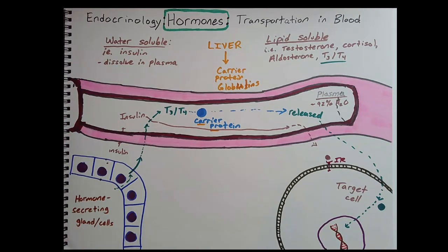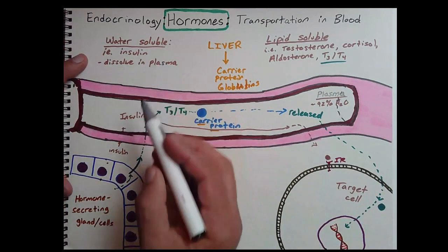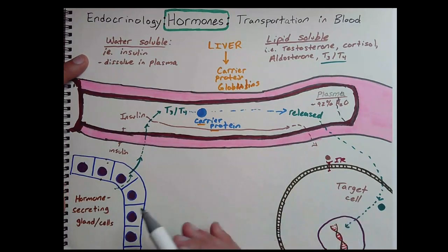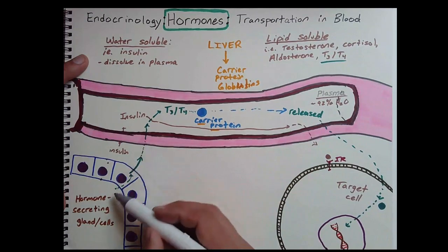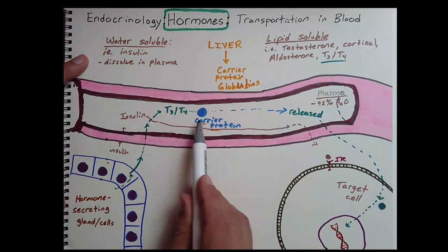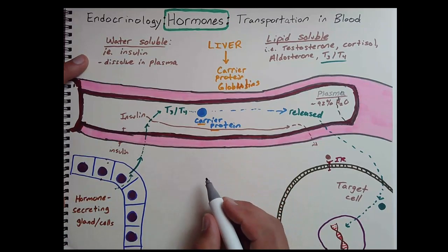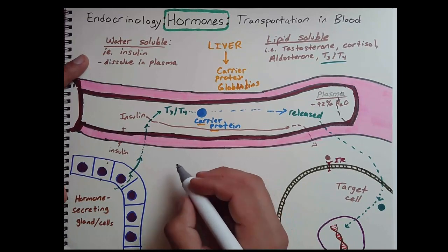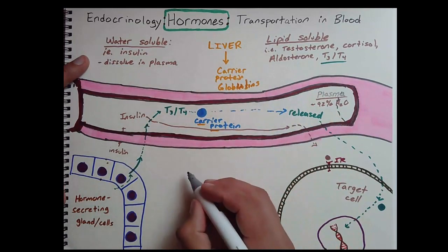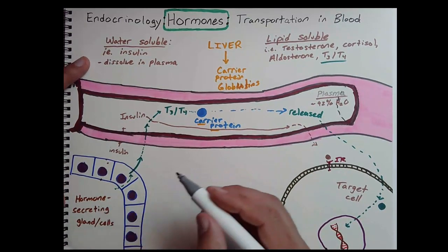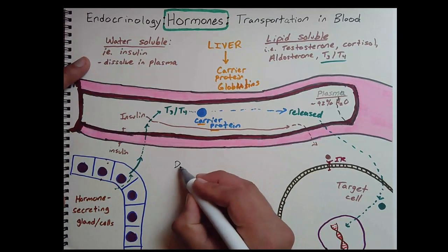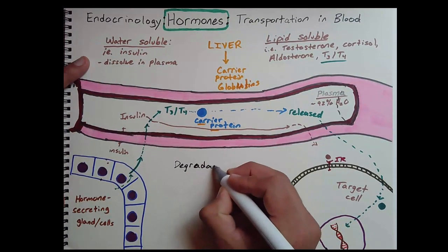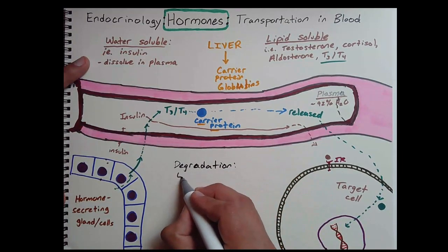What this information is going to allow you to do is, no matter what, if you have a water-soluble hormone, you know how it's transported. You also know how it's released, how it acts on target cells. Same goes with lipid-soluble. You know how it's released, always through a process of diffusion, and you also now know how it's transported, always via a carrier protein. And what this carrier protein helps to do is, not only is it protecting it against the water, but it's protecting it against degradation. So each one of these, a water-soluble hormone or a lipid-soluble hormone, they are both getting degraded by the human body.